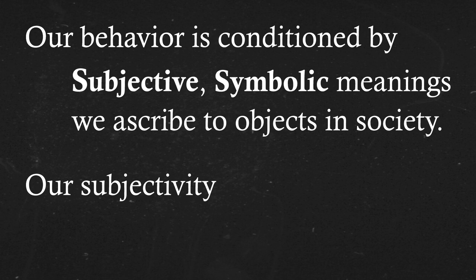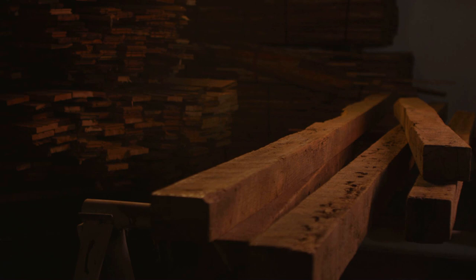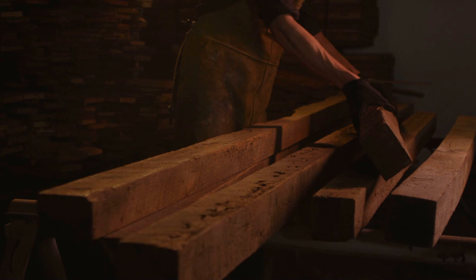For example, think of a very simple wooden cross. On a basic level, a cross is just two pieces of wood, but it obviously carries a very significant symbolic meaning for Christians — more so than for Hindus or Buddhists. So the way that people interact with a cross depends upon the subjective, culturally informed meaning that they ascribe to it as a symbol.